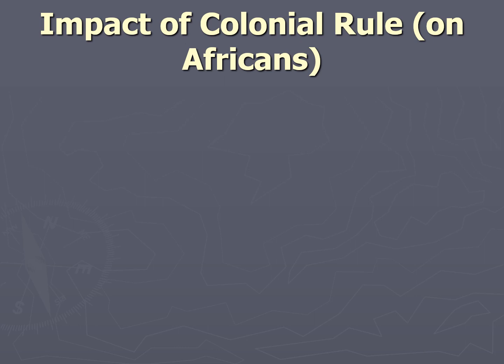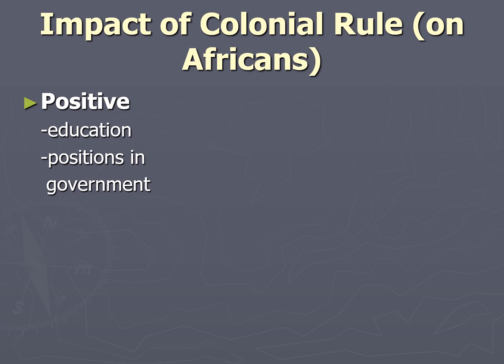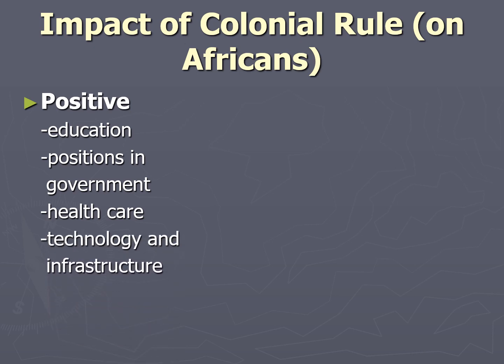Now we are going to discuss the impact colonization had on indigenous Africans. Generally speaking, there were some positive effects, but mostly it was negative. On the positive side: indigenous Africans were given Western education as schools were set up in most colonies; sometimes they could achieve more wealth by working for the colonial government; hospitals and clinics brought Western medicine to the colonies; and paved roads, telephone lines, and indoor plumbing improved the standard of living — although it is important to note that much of the technology benefited mostly the Europeans. You could also make a case that even education and healthcare came at a price.